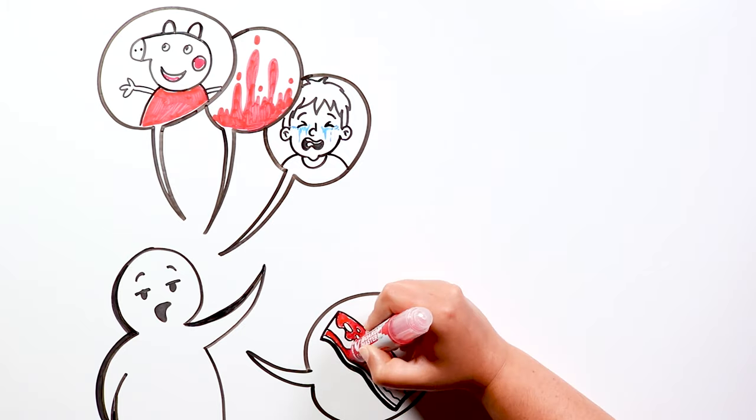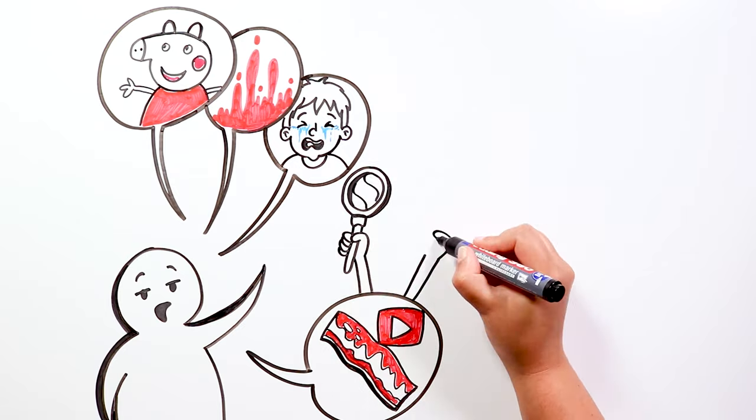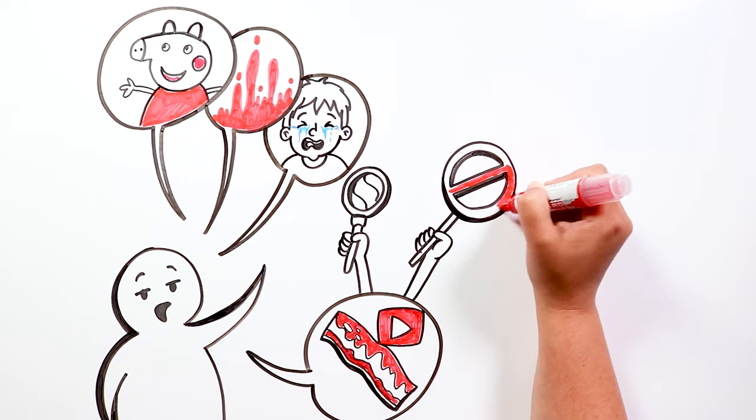Undoubtedly one of the bloodiest and most terrifying was Peppa and the Bacon, considered a lost episode for some, and by others, a video that should be banned from the internet.